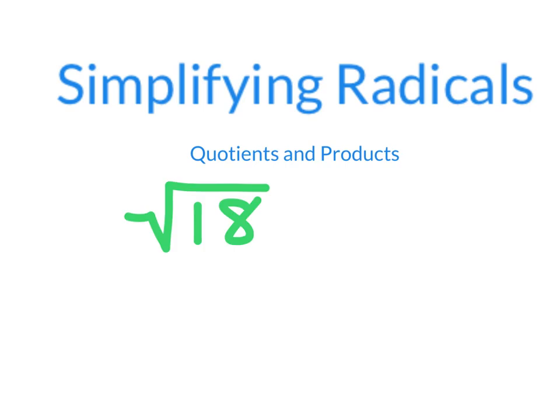Recall that when we simplify a radical, we rewrite it with no more perfect square factors inside of it. So in this case, since 18 is the product of 9 times 2, and 9 is a perfect square, we can rewrite the square root of 18 as the square root of 9 times the square root of 2, and we write this as 3√2.